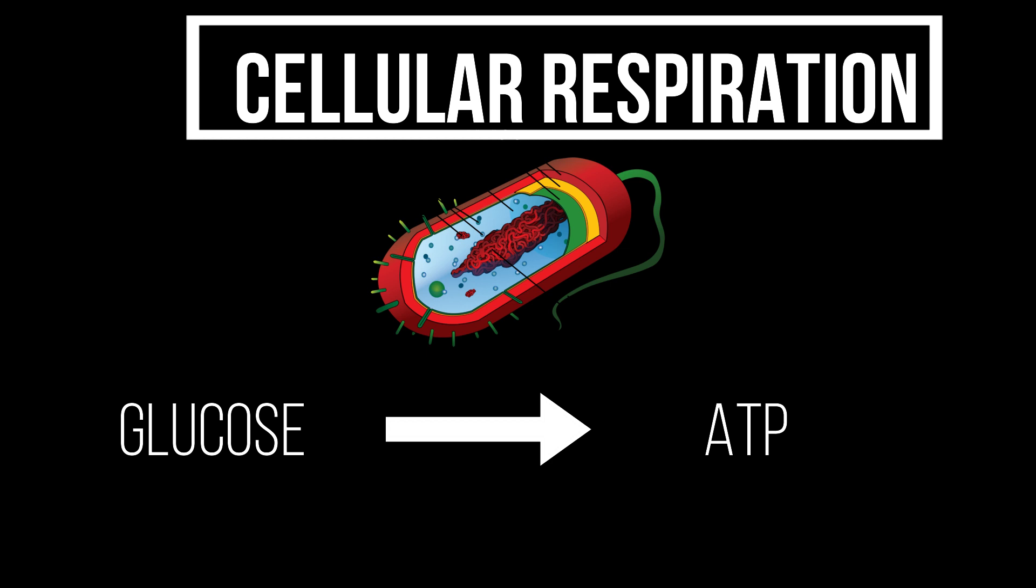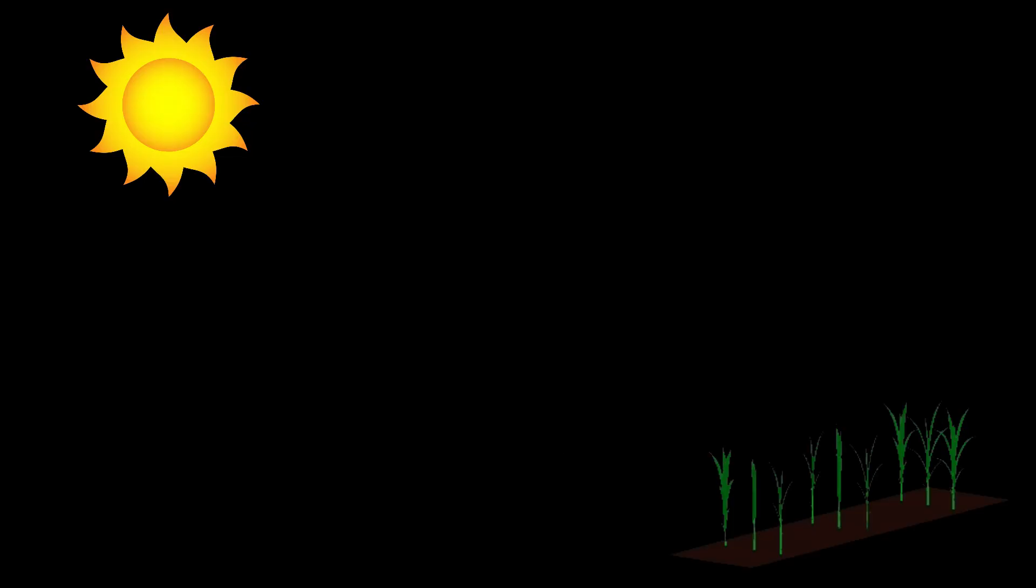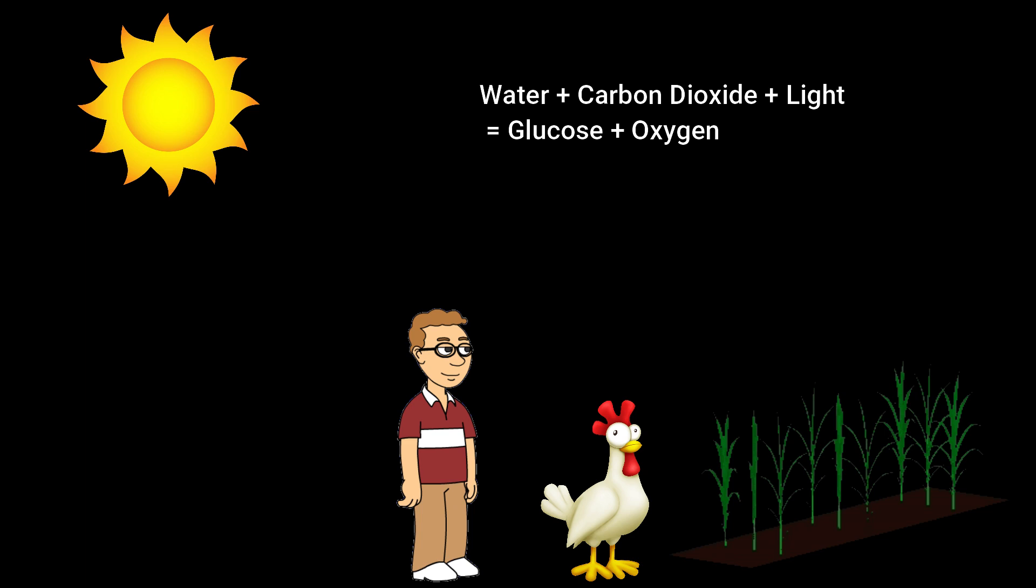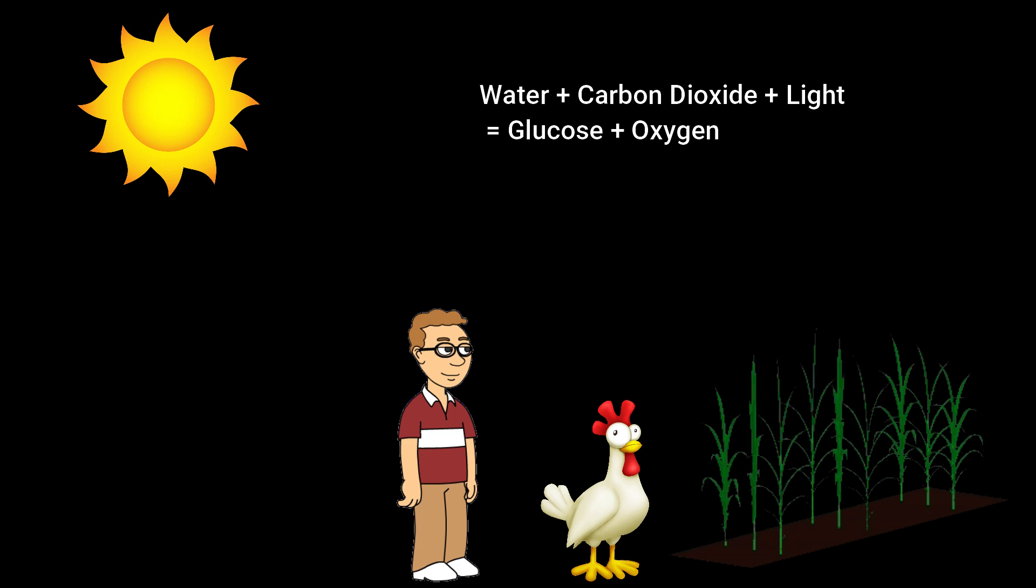In our previous videos on photosynthesis, we talked about how plants use the process of photosynthesis to convert light energy into glucose. We humans then eat these plants, or we eat the animals that eat these plants, and after we eat these plants or animals, we obtain the glucose that was previously in the plant.